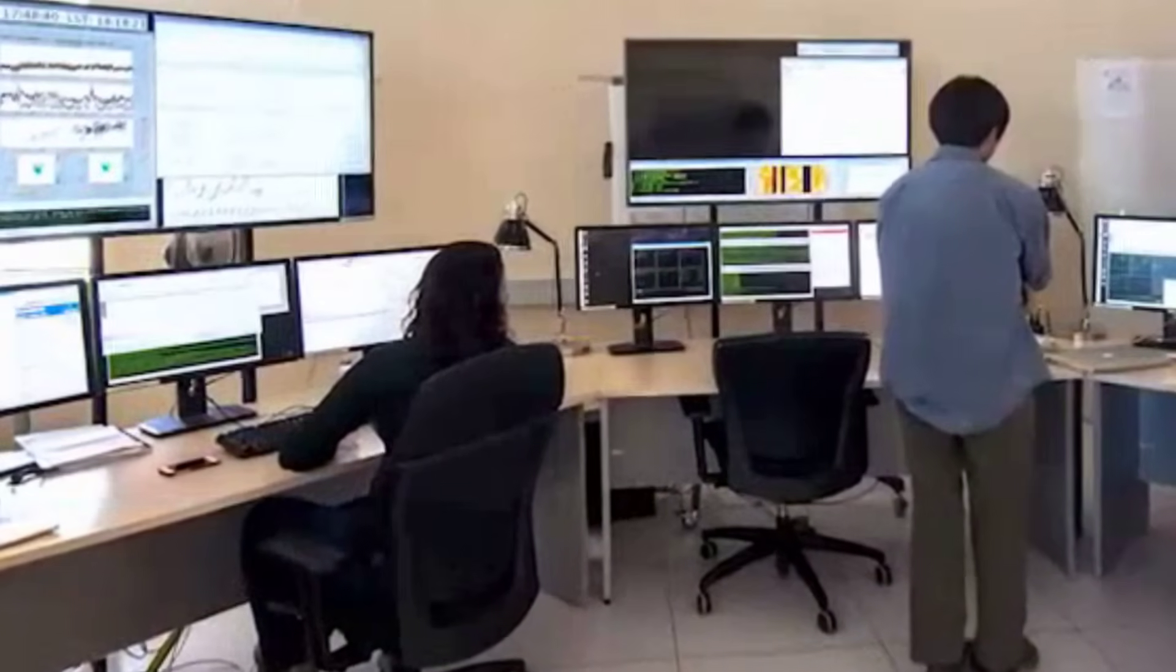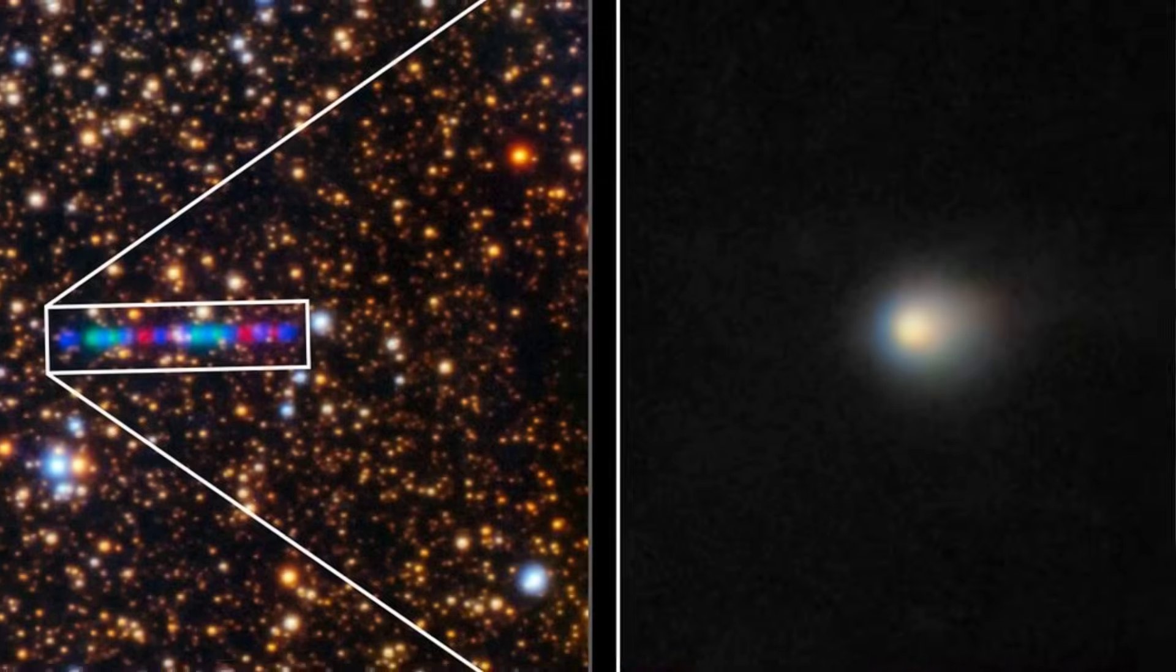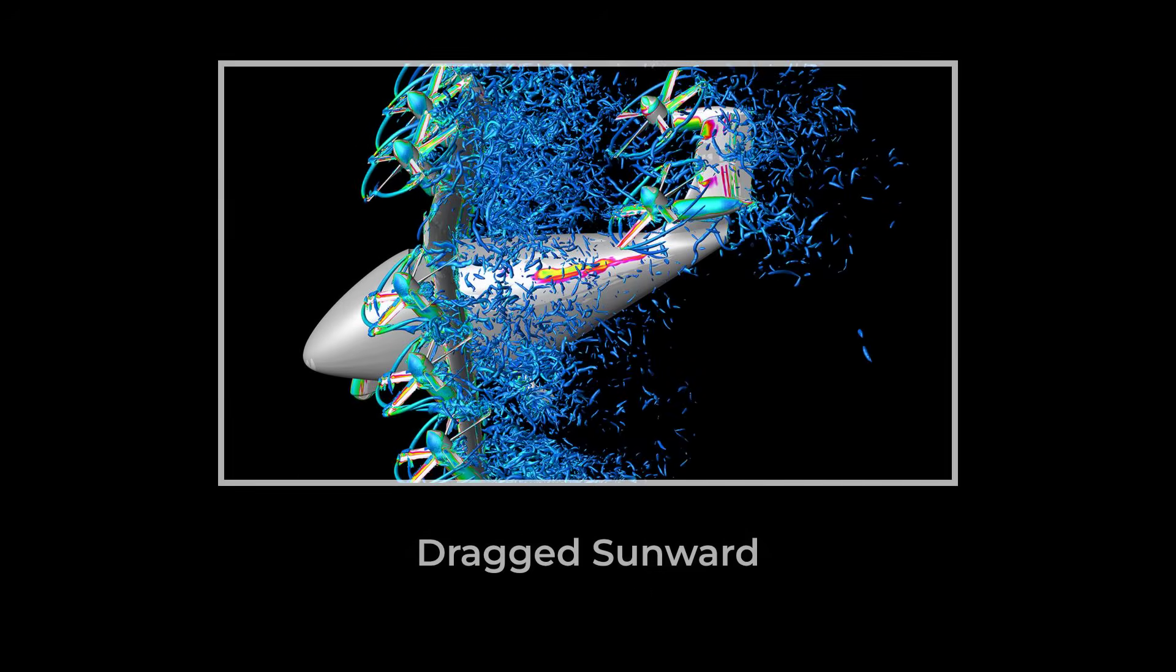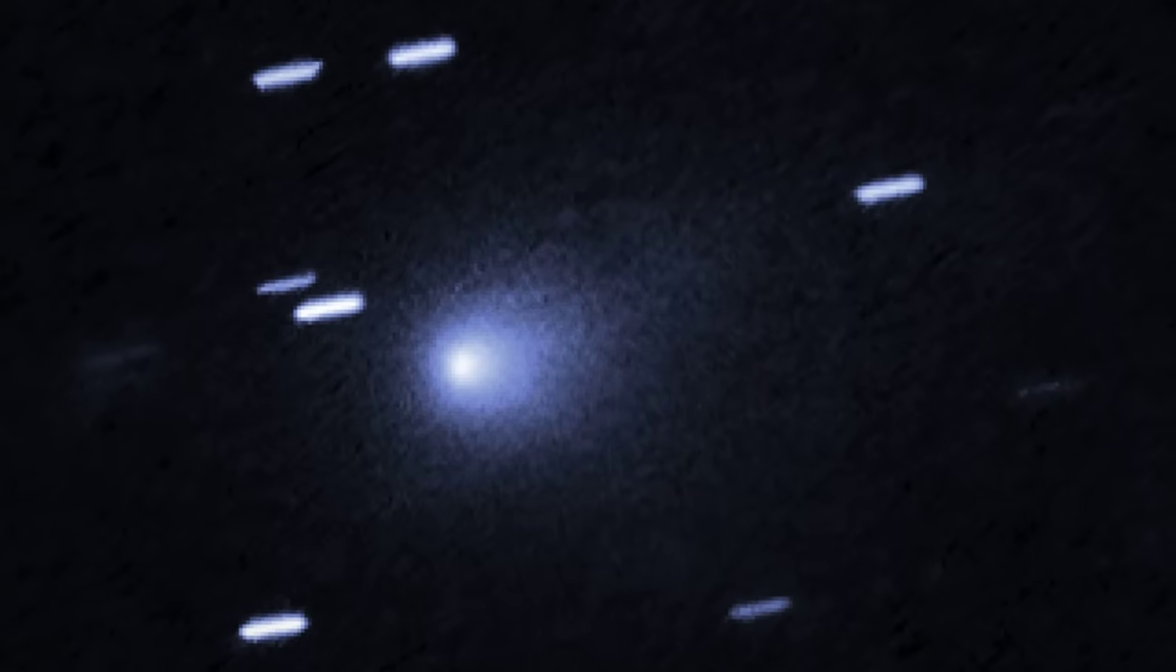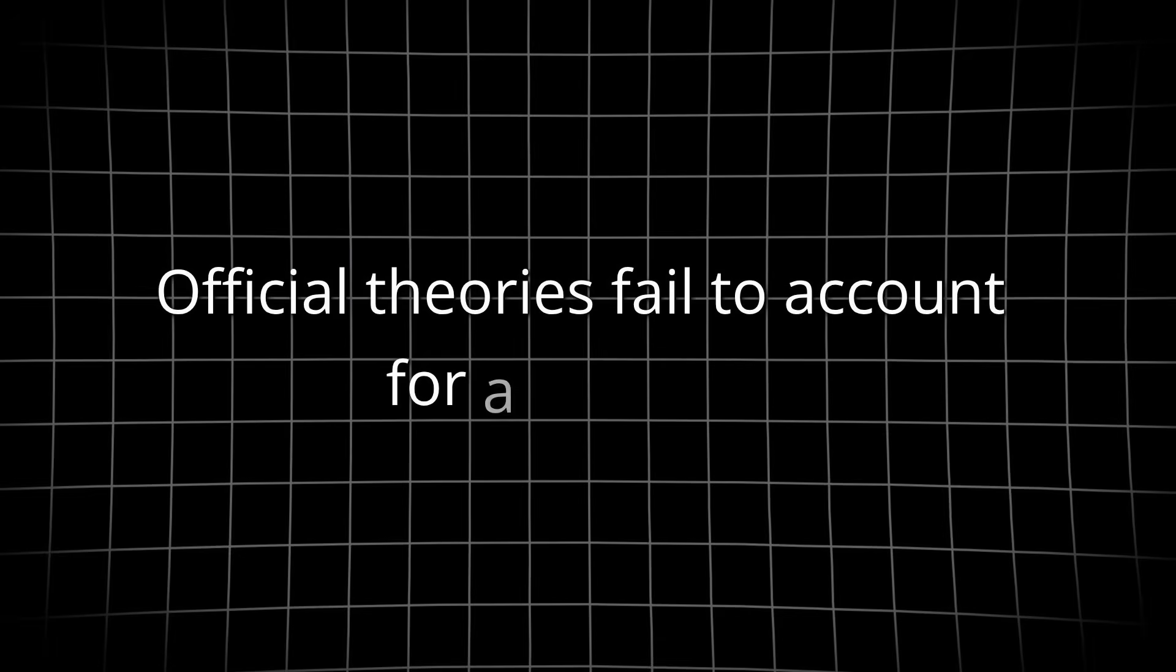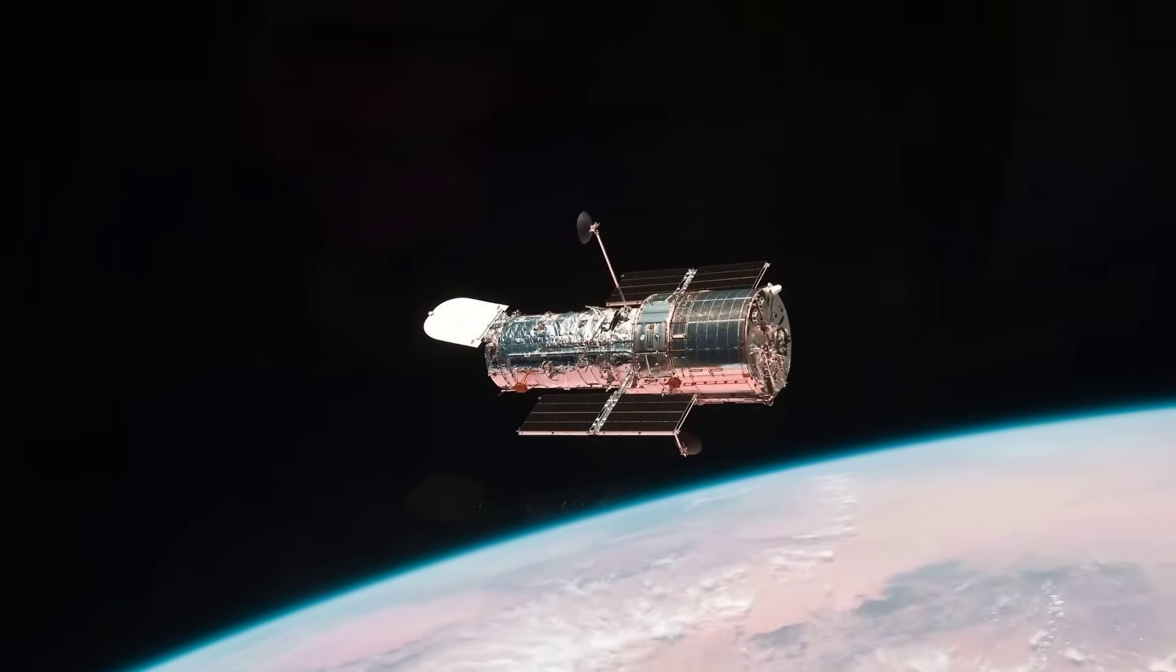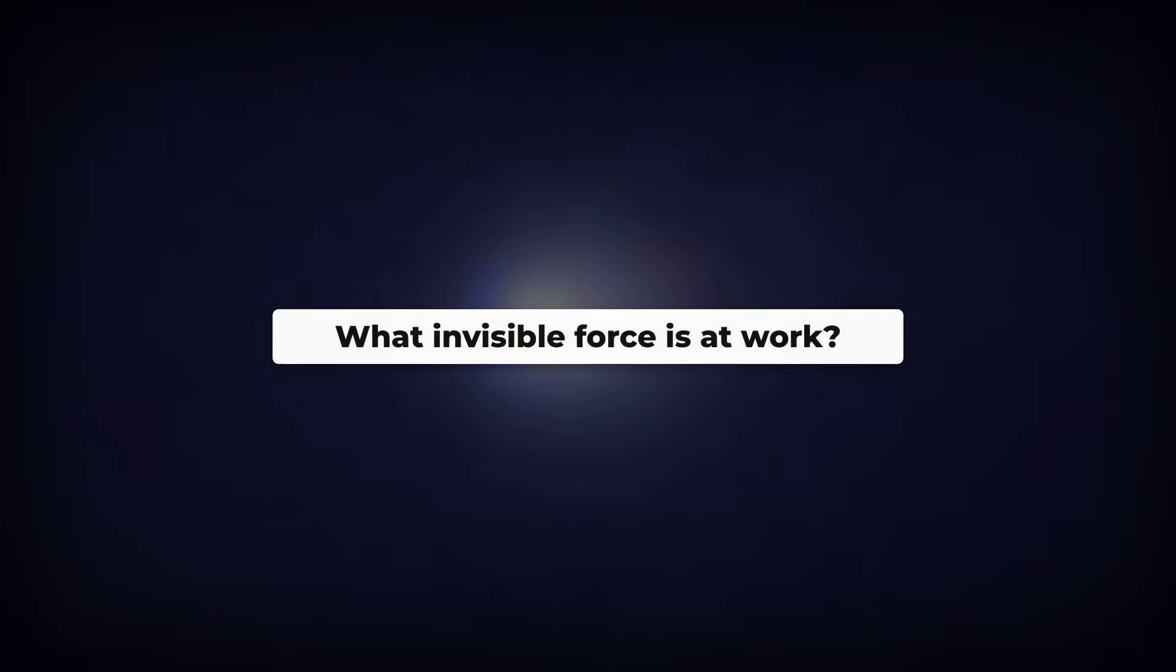In July 2025, astronomers spotted an interstellar object behaving like no comet ever recorded. It appeared to be dragged by a force that is not gravity, with a glowing teardrop stretching toward the Sun itself. Official theories fail to account for a constant, Sun-facing push. If 3I Atlas is pulling a hidden swarm through our solar system, even NASA is left searching for answers. What invisible force is at work, and what secrets does this alien visitor carry?